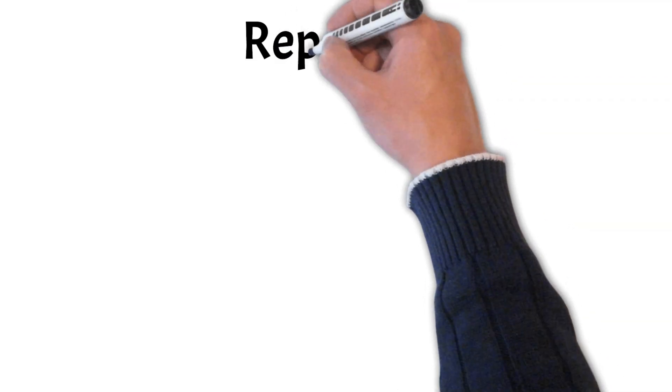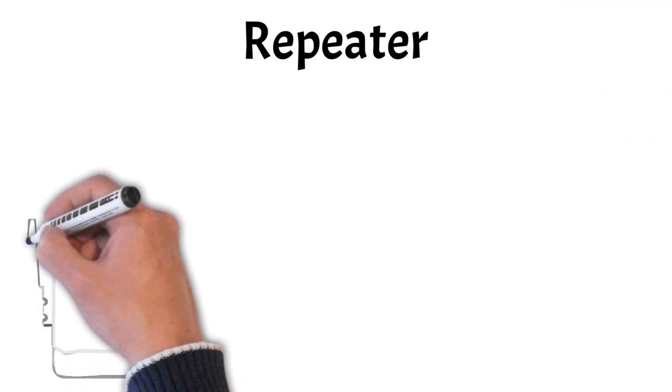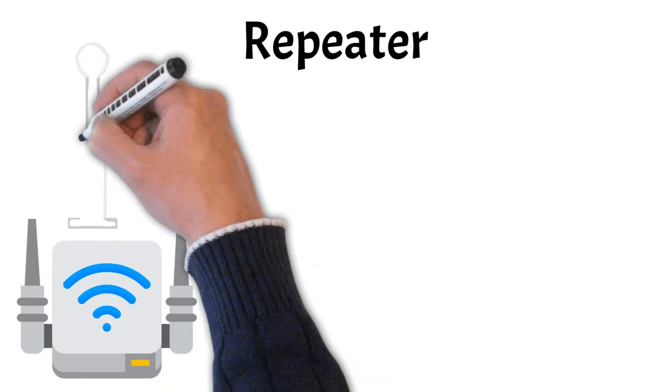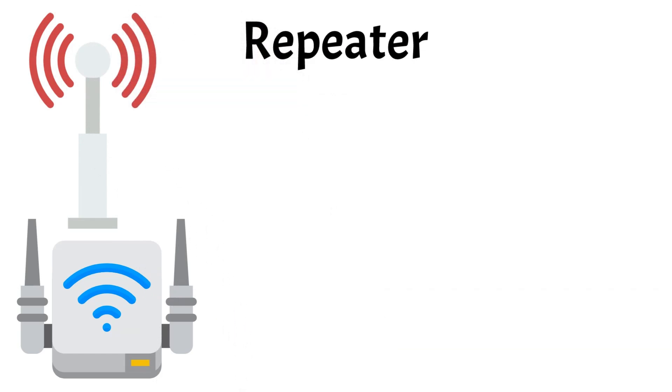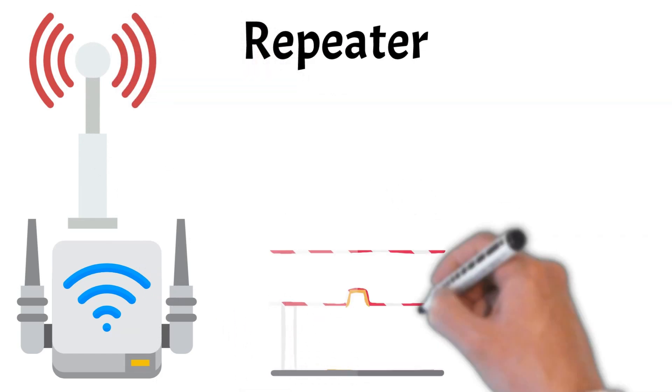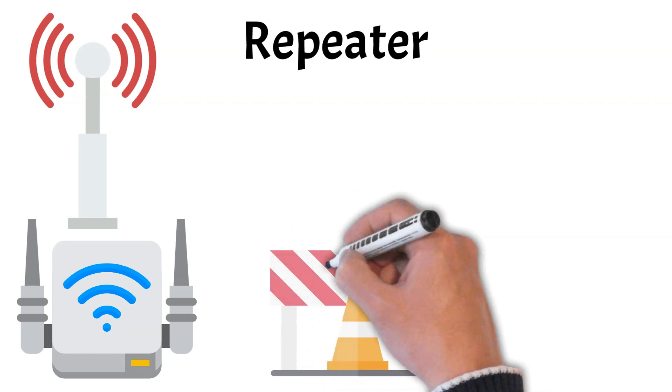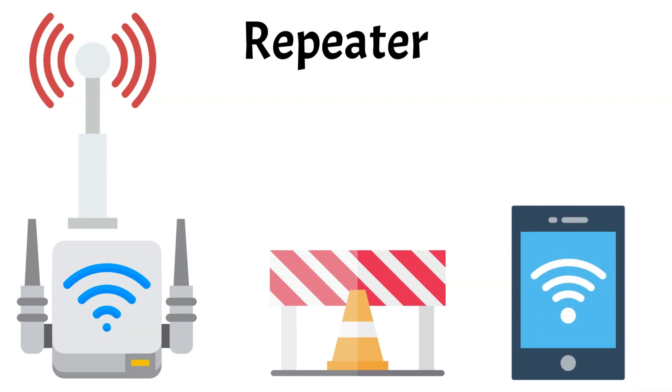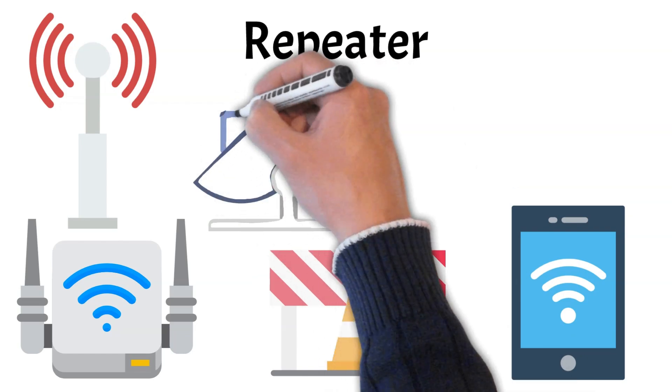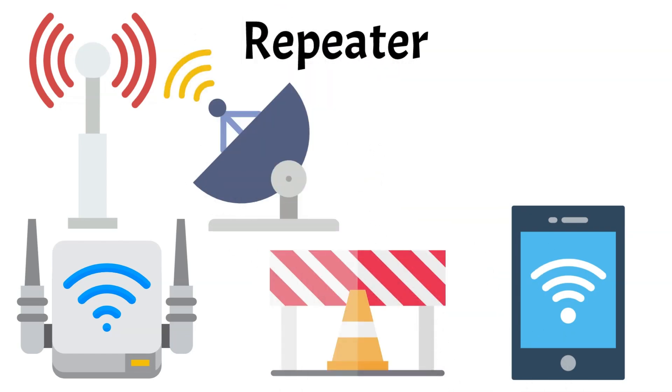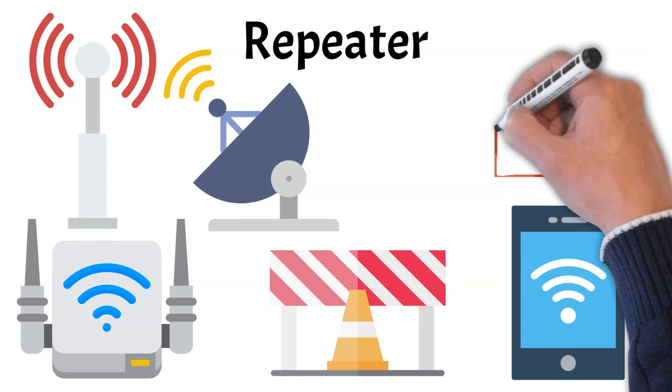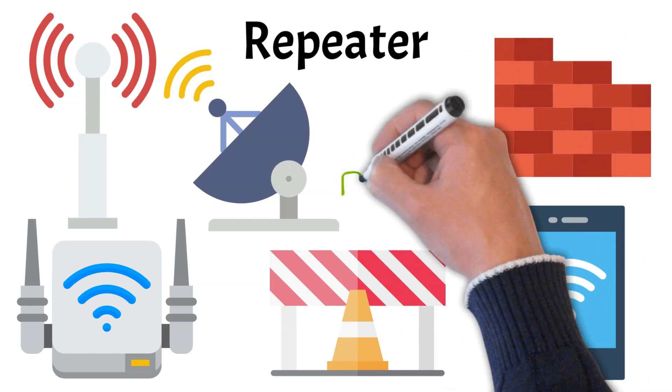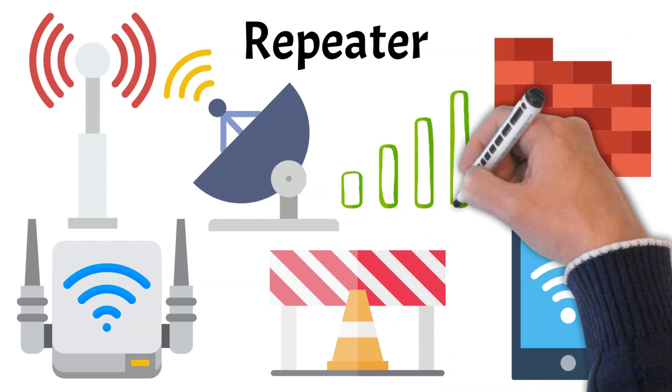Now let's explore the function of repeaters. A repeater is a device that regenerates and amplifies signals to extend the reach of a network, effectively bridging the gap between two distant points. When data travels over a network, the signal can weaken due to distance or obstacles. A repeater boosts this signal, allowing it to travel further without degradation. Unlike access points which create new wireless networks or enhance existing ones, repeaters simply receive signals and retransmit them, ensuring that data can travel across larger areas. This makes repeaters particularly useful in environments where physical barriers might hinder connectivity, helping maintain a stable and robust network connection throughout the space.